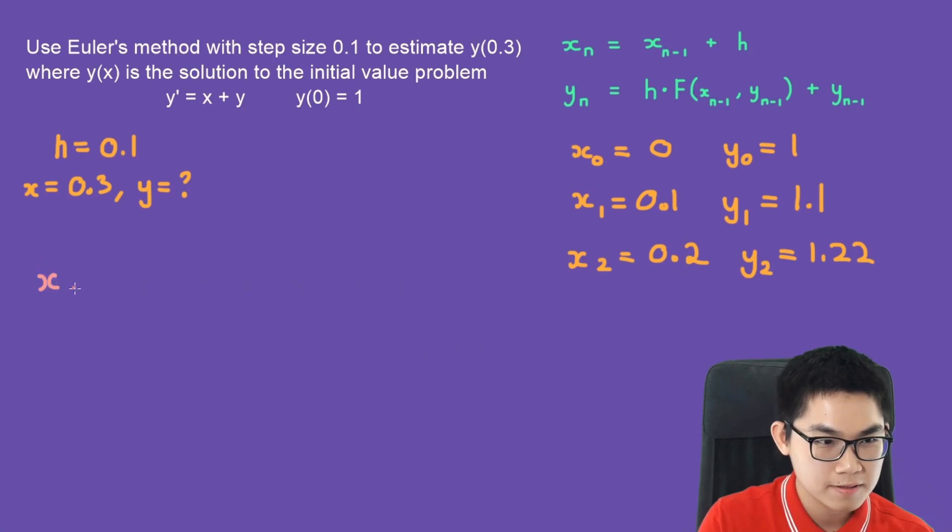How about x3? Well, x3 is x2 plus h. And x2 is 0.2 plus 0.1. That gives you 0.3.